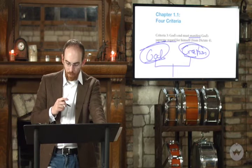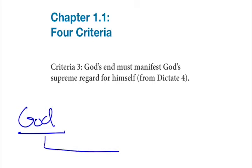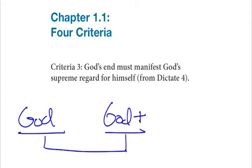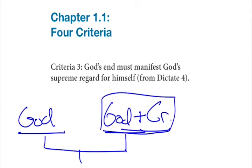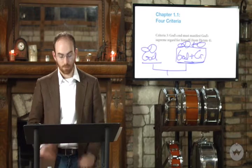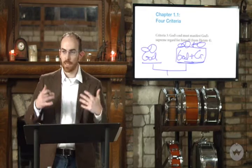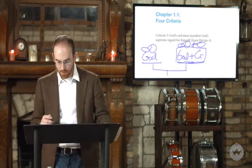Edwards poses this question: take that scale, put God on one side and God plus creation on the other — which is heavier? You might think God plus creation is heavier. But the answer is neither one is heavier; they balance perfectly. God is worth infinite, and God plus creation is worth infinite plus zero. This is Edwards' way of exposing whether you really believe creation is from nothing — do you think you have any worth autonomously, independently from God?